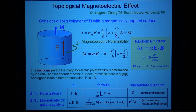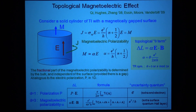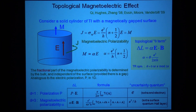Time reversal symmetry, if present, would take theta to minus theta. But since theta is defined modulo 2π, theta equals pi and theta equals minus pi are the same thing, so theta equals pi is consistent with time reversal symmetry.